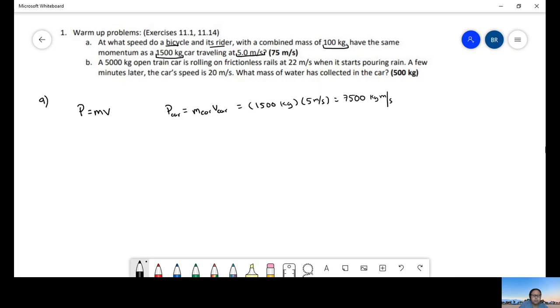Now we're going to compare this to the momentum of the bike equals mass bike times velocity bike. You want to know what speed we need. We already have momentum, we have the mass, and we're going to find the speed. So momentum over mass of the bike equals the speed of the bike. That's equal to 7,500 kilogram meters per second over 100 kilograms. It's going to be 75 meters per second.